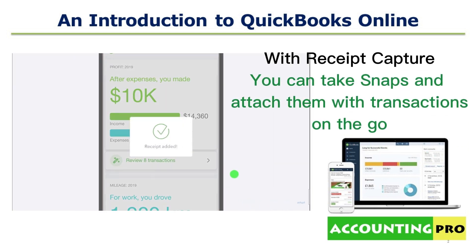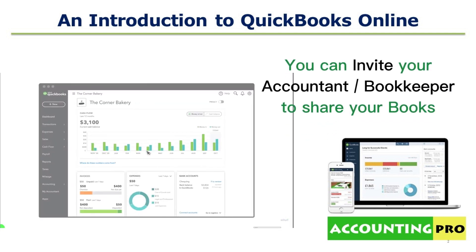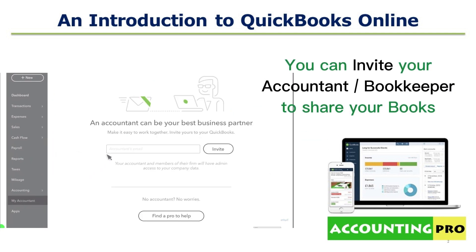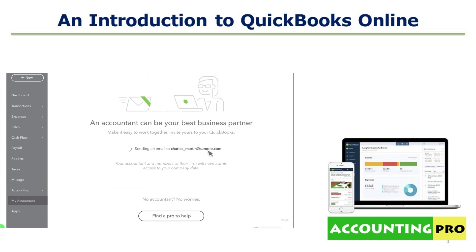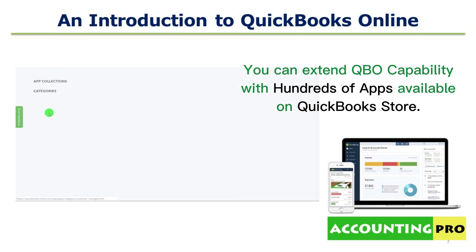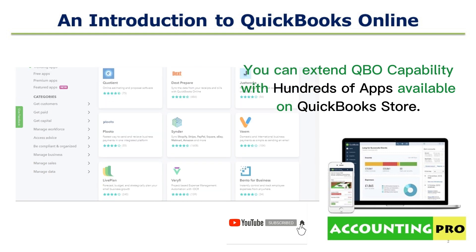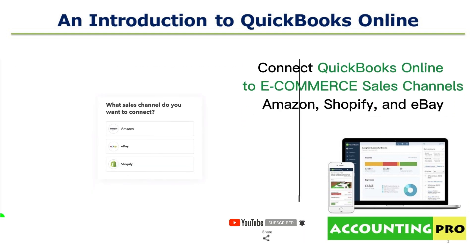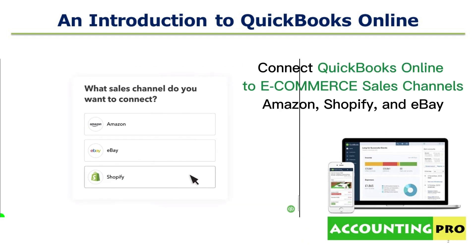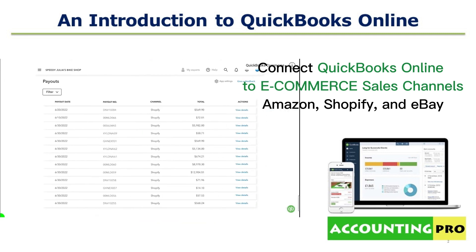With the receipt capture feature you can take pictures of the bills and directly attach them within QuickBooks Online to record expenses on the go. You can also invite your accountant or bookkeeper to work on your books. With the QuickBooks App Store you can extend the capabilities of QuickBooks Online — there are hundreds of apps. You can also connect sales channels like Amazon, eBay, and Shopify directly with QuickBooks Online without any additional app.